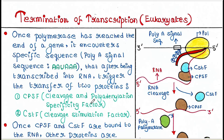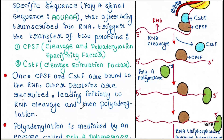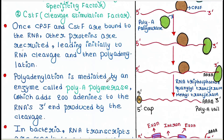CPSF is cleavage and polyadenylation specificity factor, and CSTF is cleavage stimulation factor. Once CPSF and CSTF are bound to the RNA, other proteins are recruited, leading initially to RNA cleavage and then polyadenylation. The RNA is cleaved from the RNA polymerase, and polyadenylation is mediated by an enzyme called poly-A polymerase, which adds 200 adenine residues to the RNA's three-prime end.